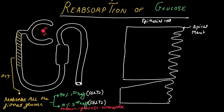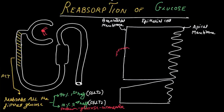There is the epithelial cell with the apical membrane — the membrane facing the lumen, through which tubular fluid flows — and the basolateral membrane, which is the membrane facing the blood. The first step is the operation of the basolateral sodium-potassium ATPase pump, which pumps out three sodium ions and pumps in two potassium ions.